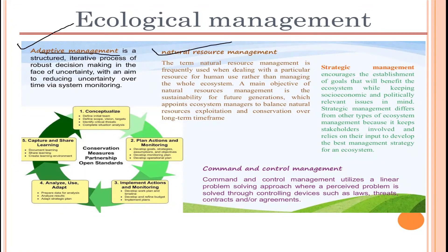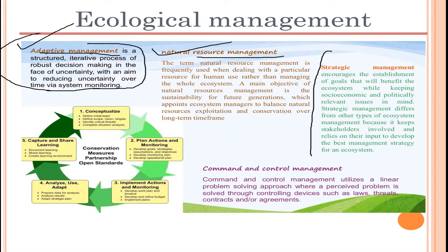Adaptive management is a structured, iterative process of robust decision-making in the face of uncertainty, with the aim to reduce uncertainty over time via system monitoring. It is very important among the management approaches.